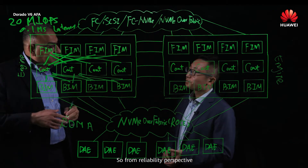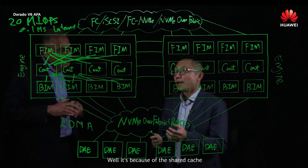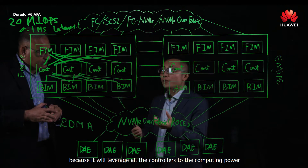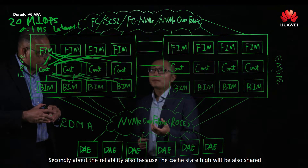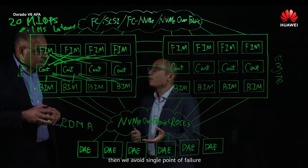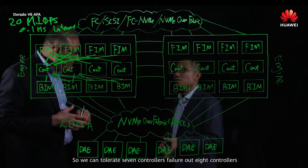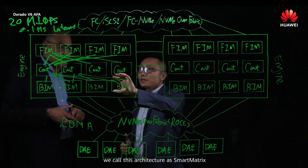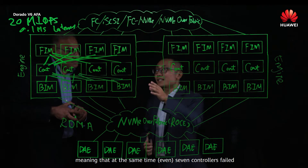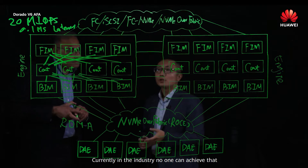From a reliability perspective, the three cache copies improve the system because the shared cache boosts performance by leveraging all the controllers' computing power, and the cache data is also shared, avoiding a single point of failure. We can tolerate seven controllers failing simultaneously. This architecture is called Smart Matrix — currently no one in the industry can achieve this.